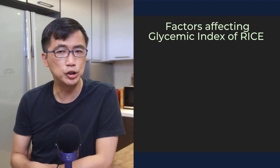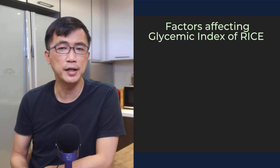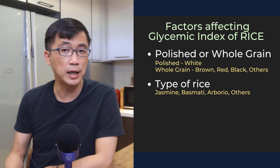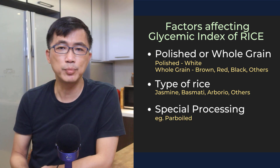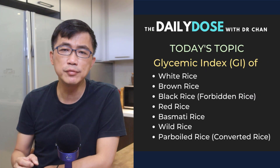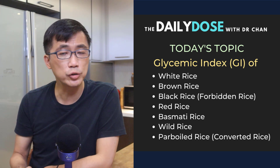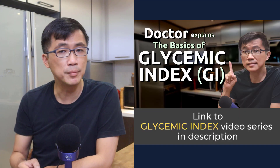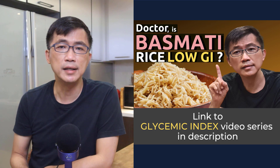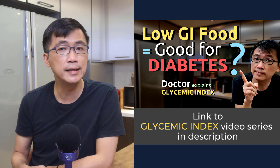So as you can see, the GI of rice can have a very wide range and is affected by many factors — such as whether the rice is polished or whole grain, the type of rice whether it is basmati, jasmine, or other types, and also how it is processed. The purpose of this video is focused on knowing the range of GI values of the different choices of rice commonly found in the supermarkets. I strongly recommend that this video be watched together with all the other videos in my glycemic index video series, in order to have a more complete picture and better understanding of glycemic index, how to use GI, and how not to use GI in guiding our food choices.